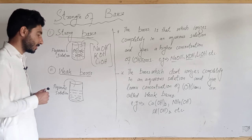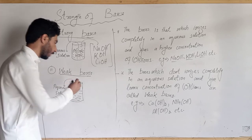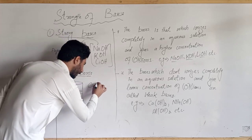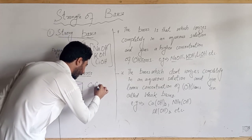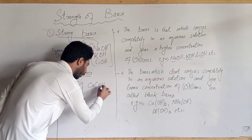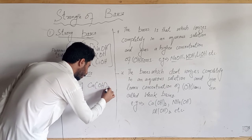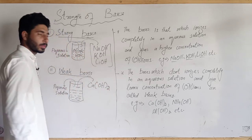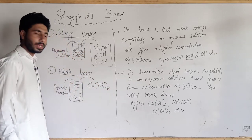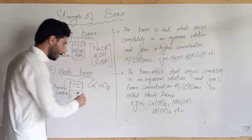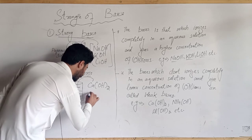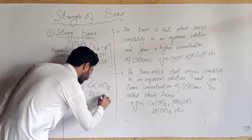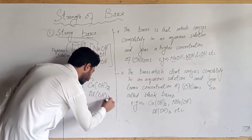For example, this type of base is a weak base. Examples include Ca(OH)₂ — when dissolved in water, it only partially ionizes. Another example is Al(OH)₃.